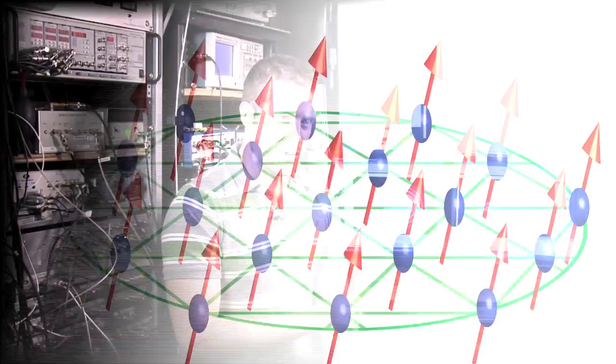Each of the ions is a quantum bit or a qubit, and you can think of this as a tiny bar magnet which is either aligned with or anti-aligned with an external magnetic field.